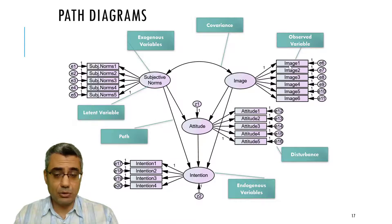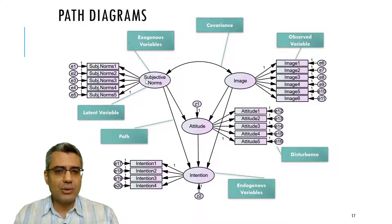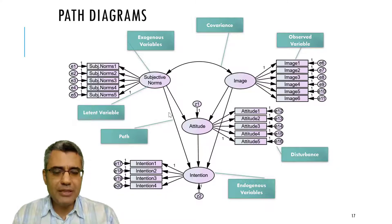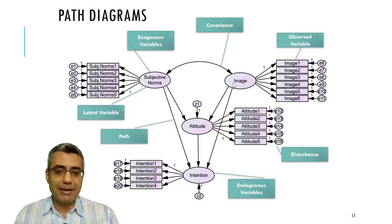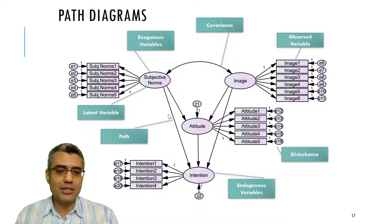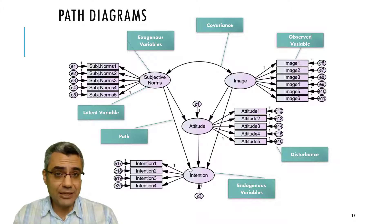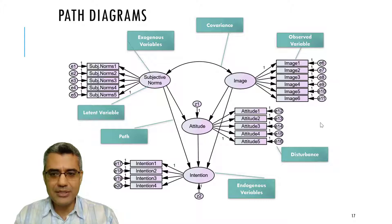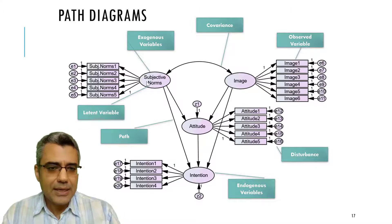Boxes are observed variables, and oval or round shapes are latent constructs. A path shows the relationship between the main variables or constructs — for example, the relationship between subjective norms and intention is shown using a single-headed arrow, and this is called a path.